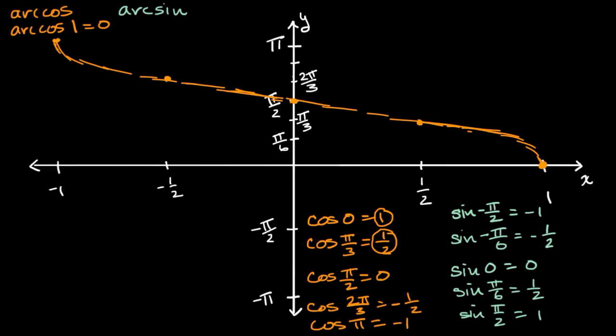Now let's do the same thing for arc sine. It's the inverse of sine. So arc sine of negative one is going to be negative pi over two. Arc sine of negative one half is going to be negative pi over six.